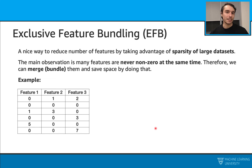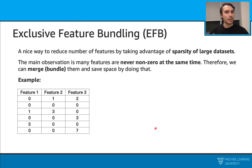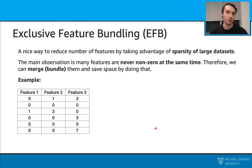Let's talk about the second improvement, Exclusive Feature Bundling (EFB). This is a nice way to reduce the total number of features by taking advantage of some sparsity of our large datasets. When we observe our datasets, we sometimes realize that we have lots of zeros in these datasets, whether they can be one-hot encoded features or they can come from some imputations — we sometimes put zero for missing values. But we always have those zeros, and this algorithm is taking advantage of that.